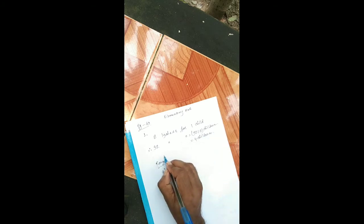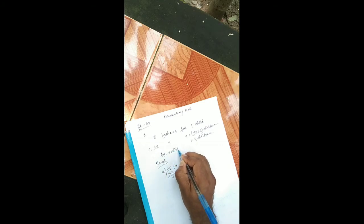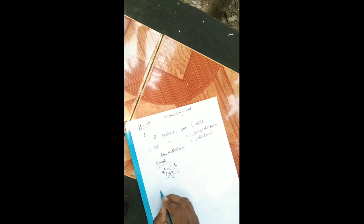Answer: 4 children. Now question number 2. Read the question: a school has 45 notebooks. If the school gives each student 5 notebooks, how many students will get notebooks?